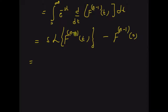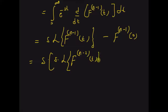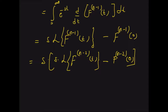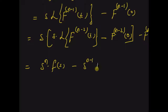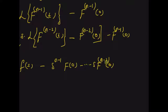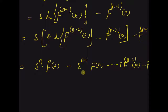Now, by using the same formula on the (n−1)th derivative, we have s times s times the Laplace transform of the (n−2)th derivative, minus f^(n−1)(0). Thus, by recursively using the formula for the Laplace transform of the first derivative, we can write the Laplace transform of the nth derivative as s^n·F(s) minus s^(n−1)·f(0) minus ... minus s times the initial value of the (n−2)th derivative, minus the initial value of the (n−1)th derivative. This is the Laplace transform of the nth derivative of a function f(t).